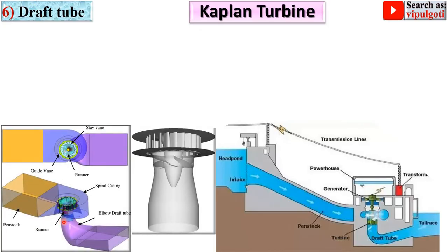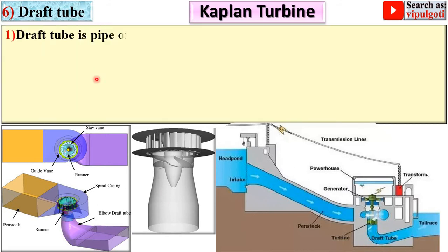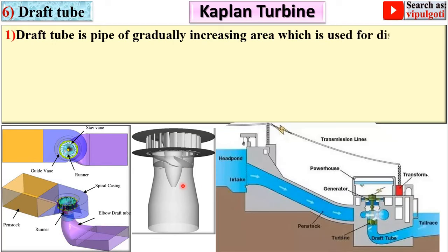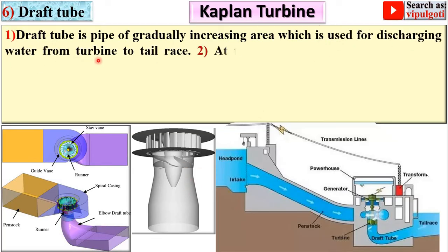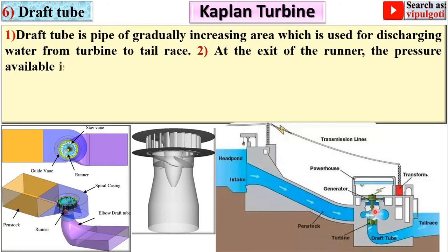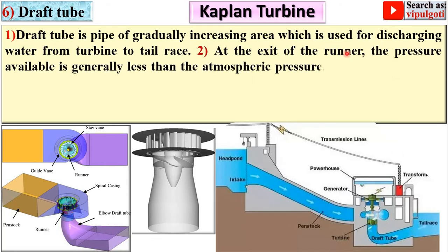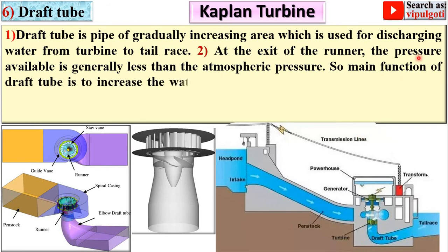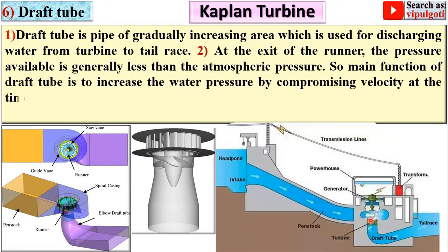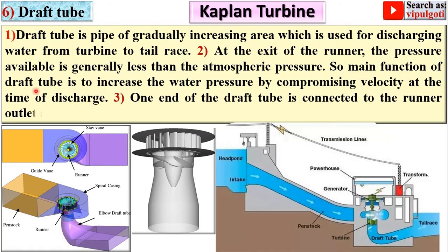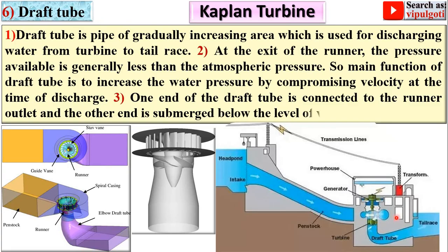Next: draft tube. The draft tube is a pipe of gradually increasing area which is used for discharging water from the turbine to the tailrace. At the exit of the runner, the pressure available is generally less than atmospheric pressure. The main function of the draft tube is to increase the water pressure by converting velocity energy at the time of discharge. One end is connected to the runner and the other end is submerged below the tailrace level.